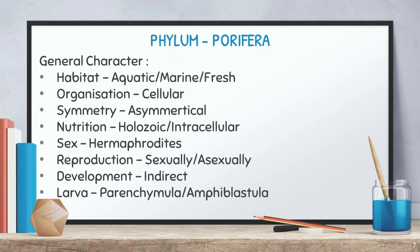Now we discuss the first phylum — Porifera. First, the habitat: most Porifera species live in marine environments, with very few living in fresh water. The organization is cellular level of organization, and symmetry is asymmetrical. Nutrition is holozoic — a complete nutrition process going step by step from ingestion through digestion, absorption, assimilation, and egestion.